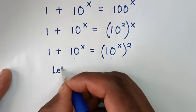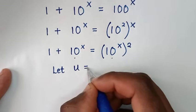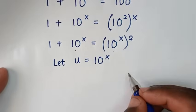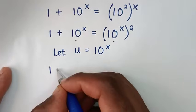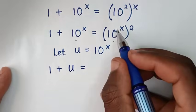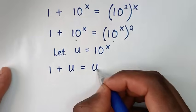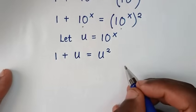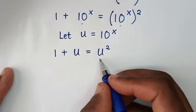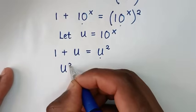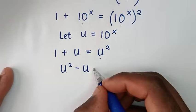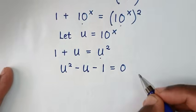We let u equal to 10 power of x. Then our equation becomes 1 plus u is equal to u squared. Rearranging, we get u squared minus u minus 1 is equal to 0.